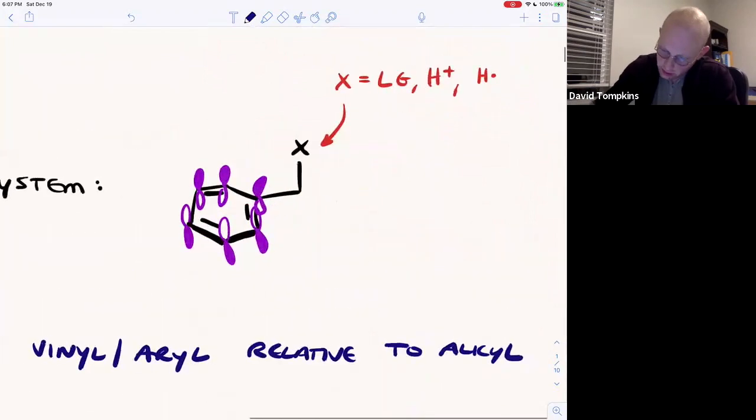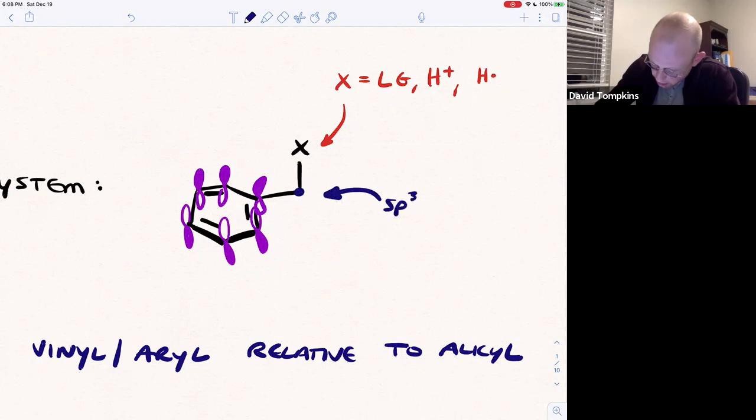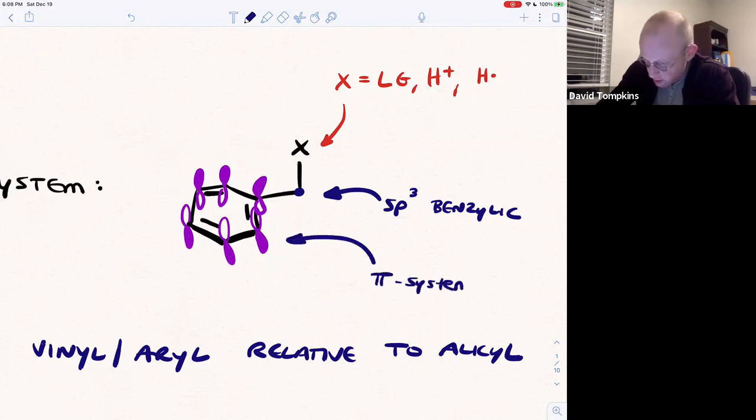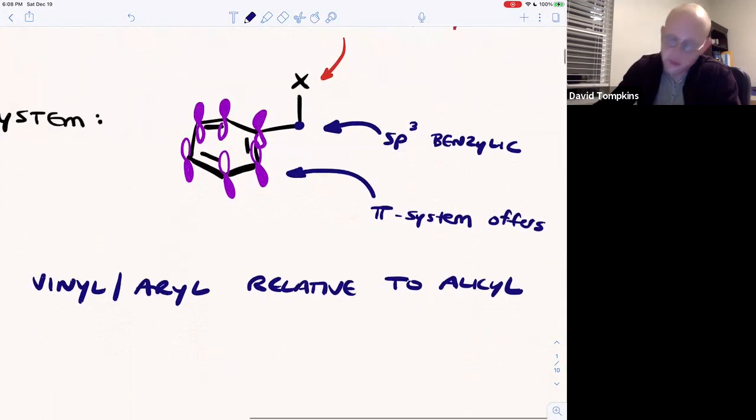So in other words, if you have X where X could be a leaving group for a substitution or elimination, could be a proton in an acid-base type reaction, or could be a hydrogen radical, this position sp3 hybridized benzylic carbon is very reactive and it has to do with conjugation with this pi system where it's one away. And that pi system can conjugate and stabilize intermediates. And it also can conjugate and stabilize transition states.